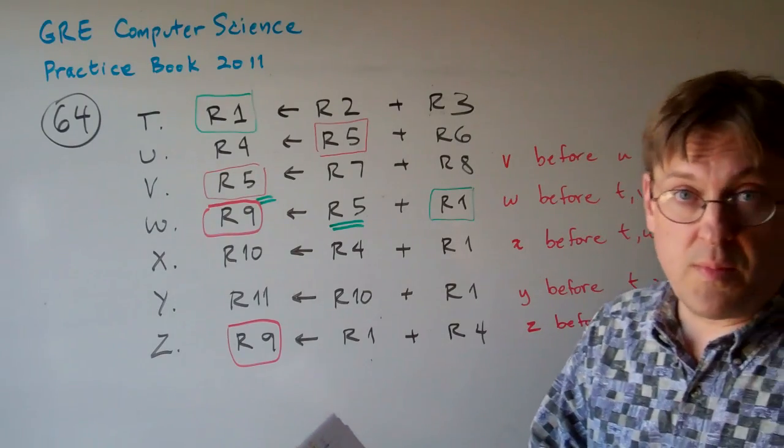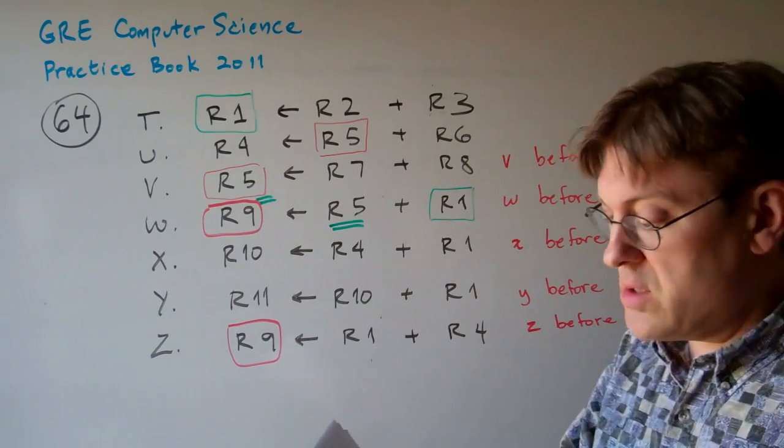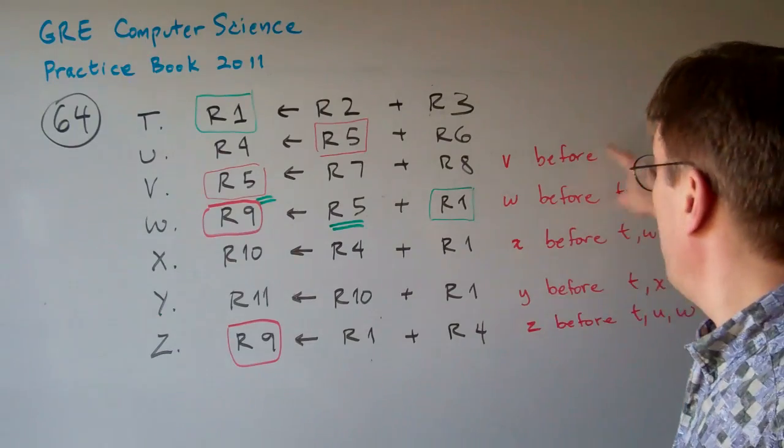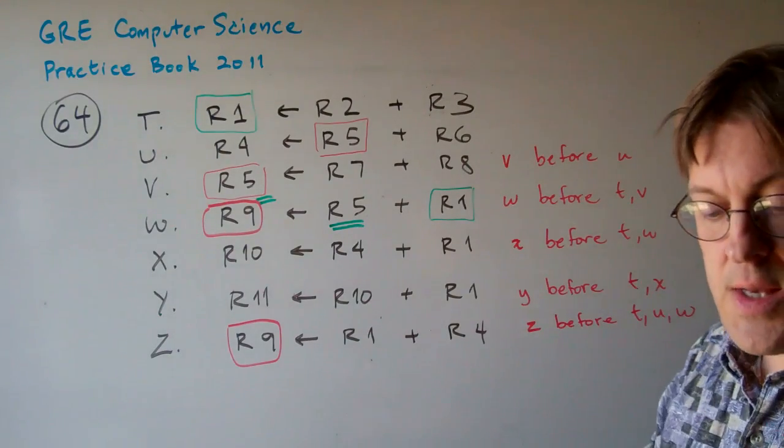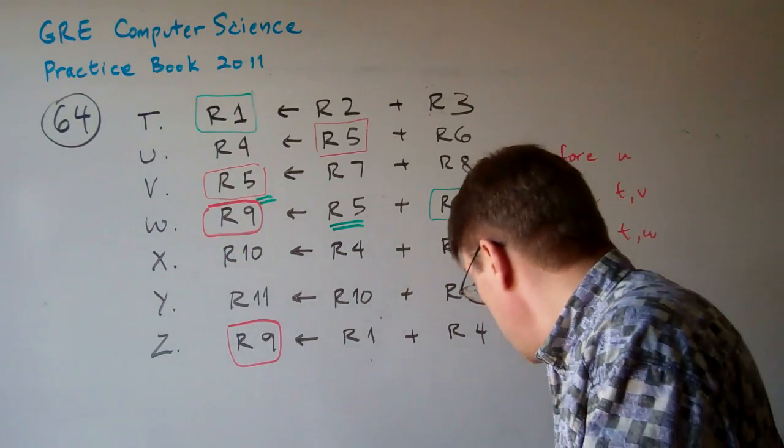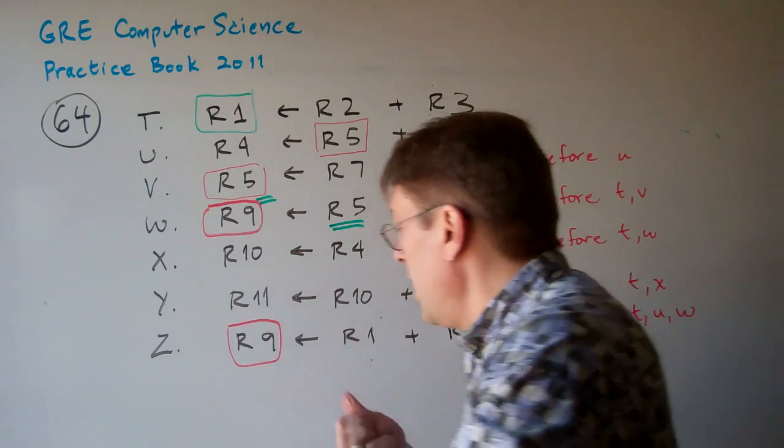So, simple process of going through the answers. All of the answers have one of these problems except answer A. So, the correct answer is A.